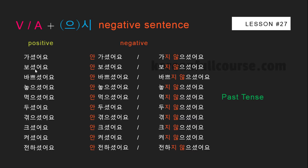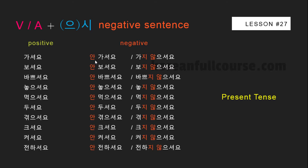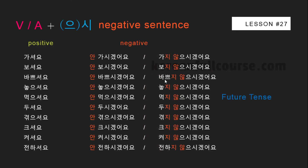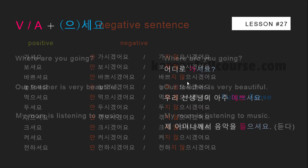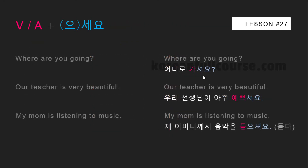These examples show you how to turn positive sentences in the past tense into negative sentences in two different ways — choose whichever you like. For example: 가셨어요, 보셨어요, 바쁘셨어요 become 안 가셨어요, 안 보셨어요, 안 바쁘셨어요, or 가지 않으셨어요, 보지 않으셨어요, 바쁘지 않으셨어요. In the future tense: 안 가시겠어요, 안 보시겠어요, 안 바쁘시겠어요, or 가지 않으시겠어요, 보지 않으시겠어요, 바쁘지 않으시겠어요.